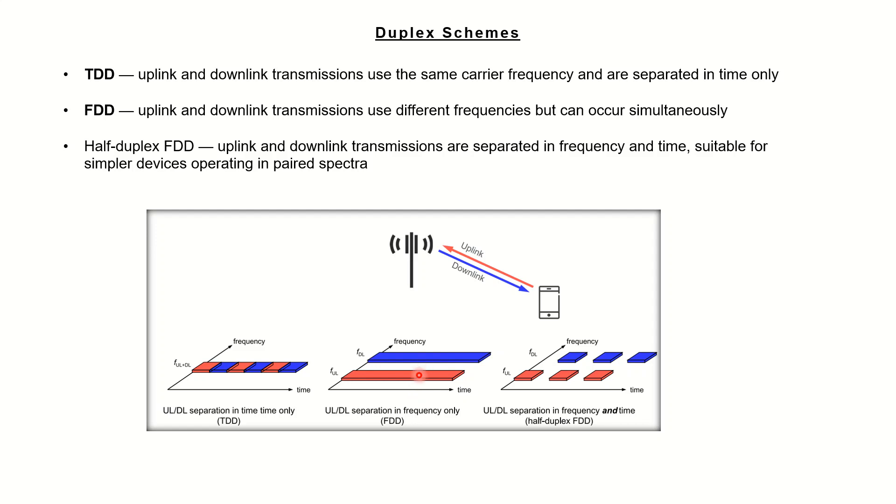The chances of interference is not there in case of FDD. There would be some possibility of interference in TDD, but it needs to be ensured that there is proper synchronization between the user, between the base station, and how the allocation will be done.